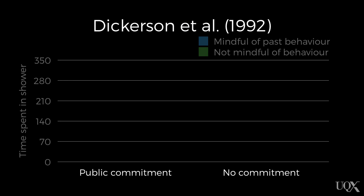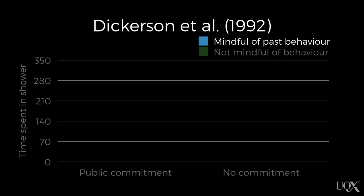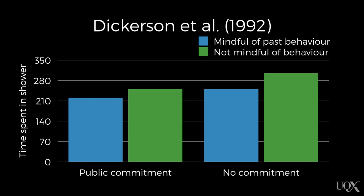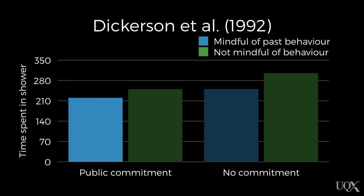The results show on the x-axis the two conditions — whether participants had made a public commitment by signing the petition or had not — and on the y-axis, how long the shower was on in seconds. The blue group had been reminded of their past wasteful behaviour via the biased checklist, while the green had not. The greatest hypocrisy — and therefore the most motivation to change behaviour to repair their self-concept — occurred when swimmers both made a public commitment and were reminded of their past wasteful behaviour. And it is precisely these people who took the shortest showers.